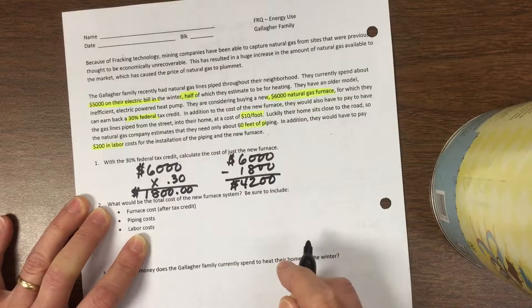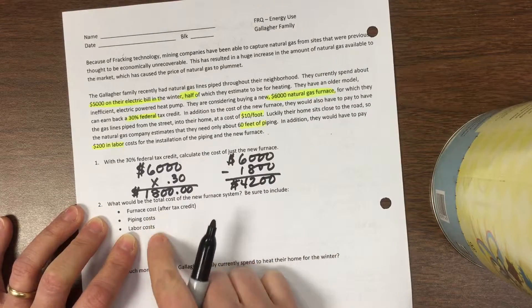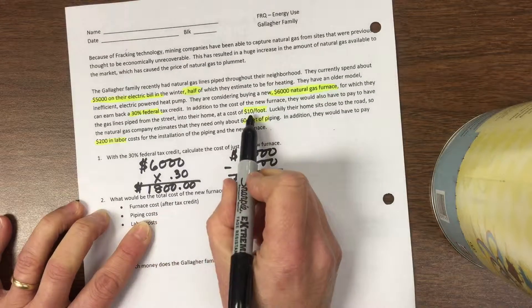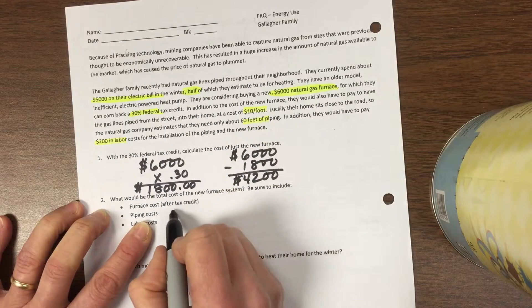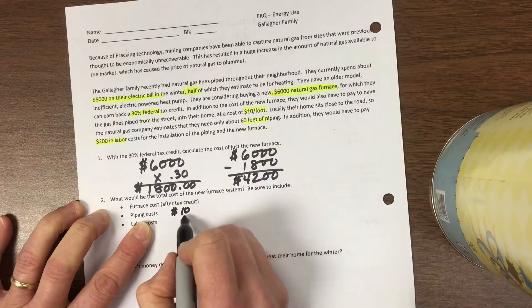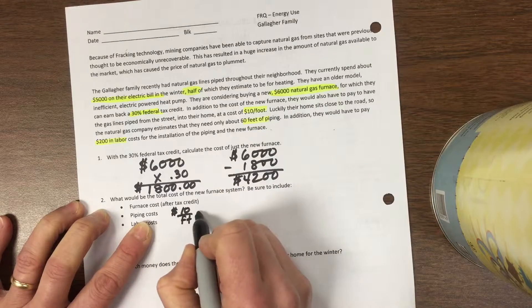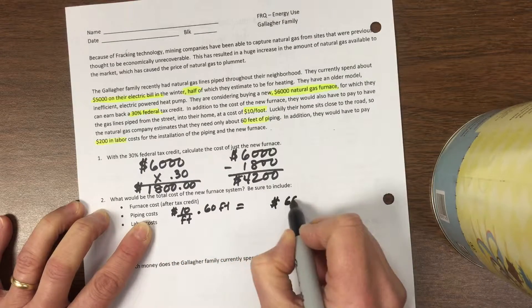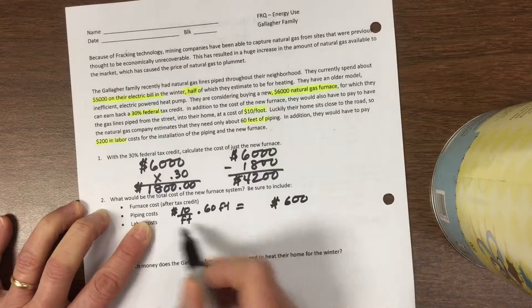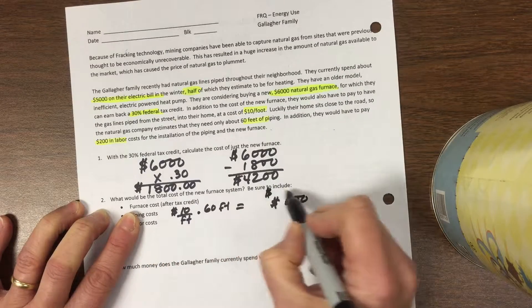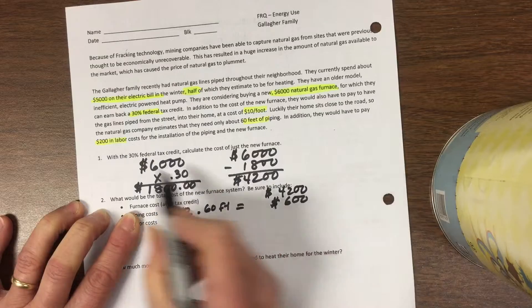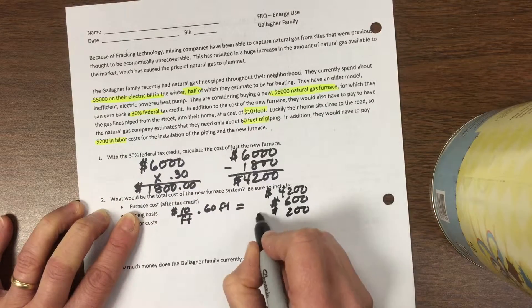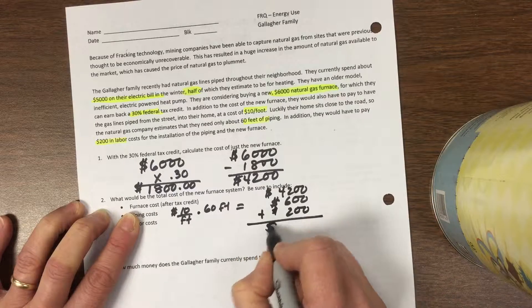But they have to pay these other costs. For the pipes alone, they have to pay $10 a foot for 60 feet of piping, so that's $600. The furnace itself we just calculated was $4,200, and then $200 for labor. Add that up, the total cost for this new furnace is actually going to be $5,000.